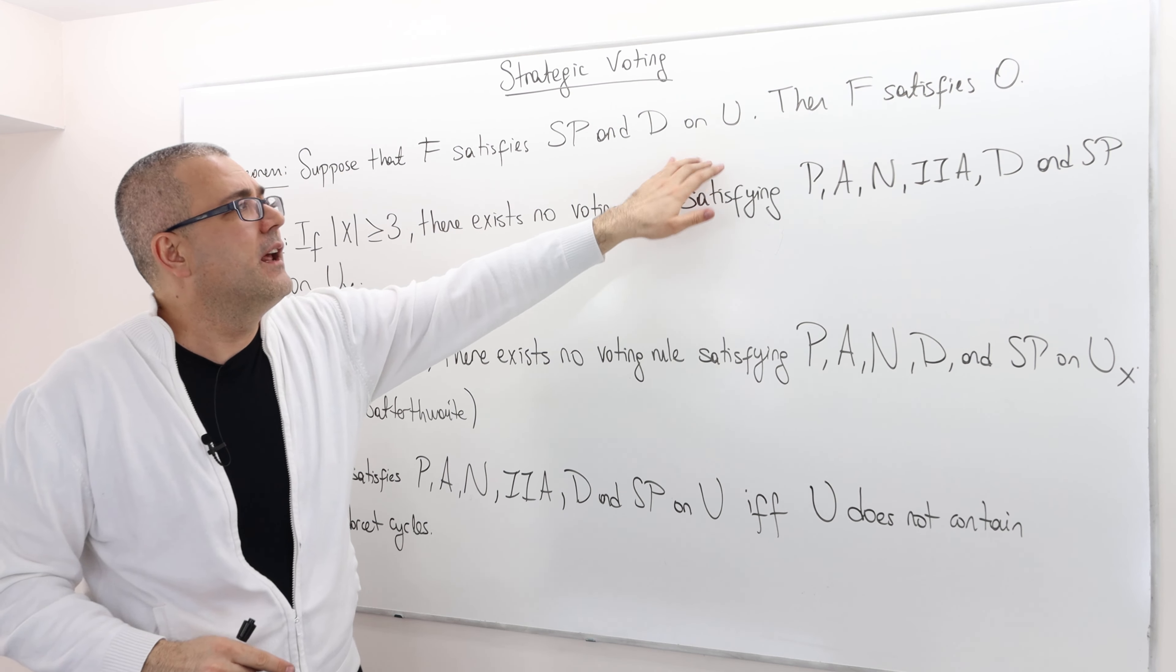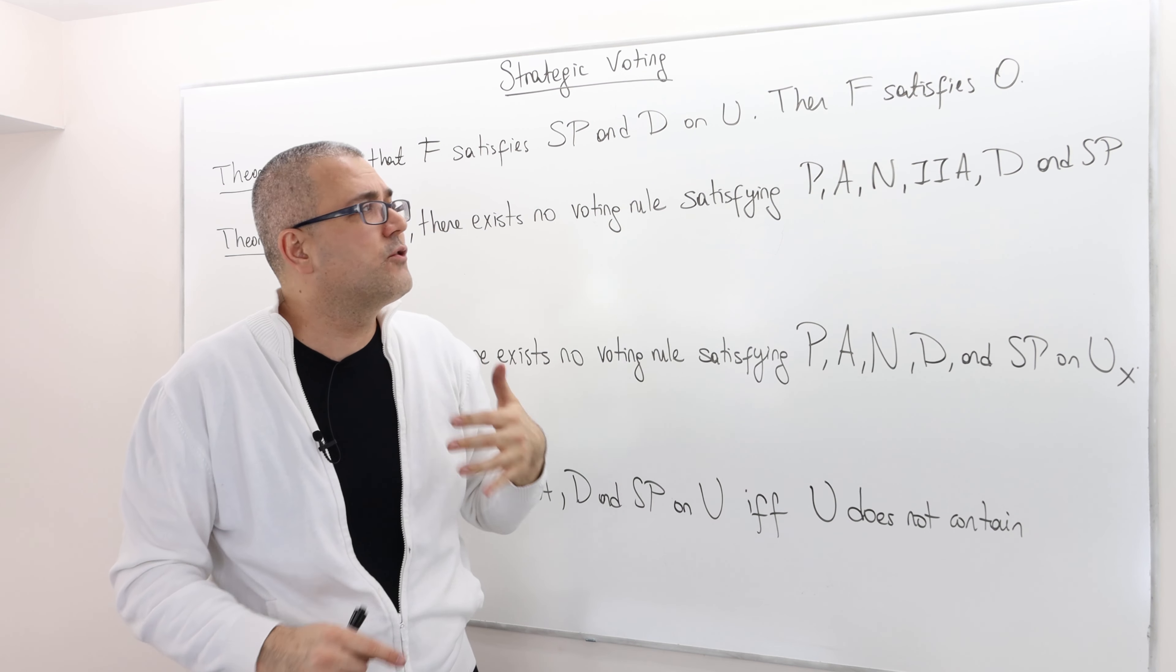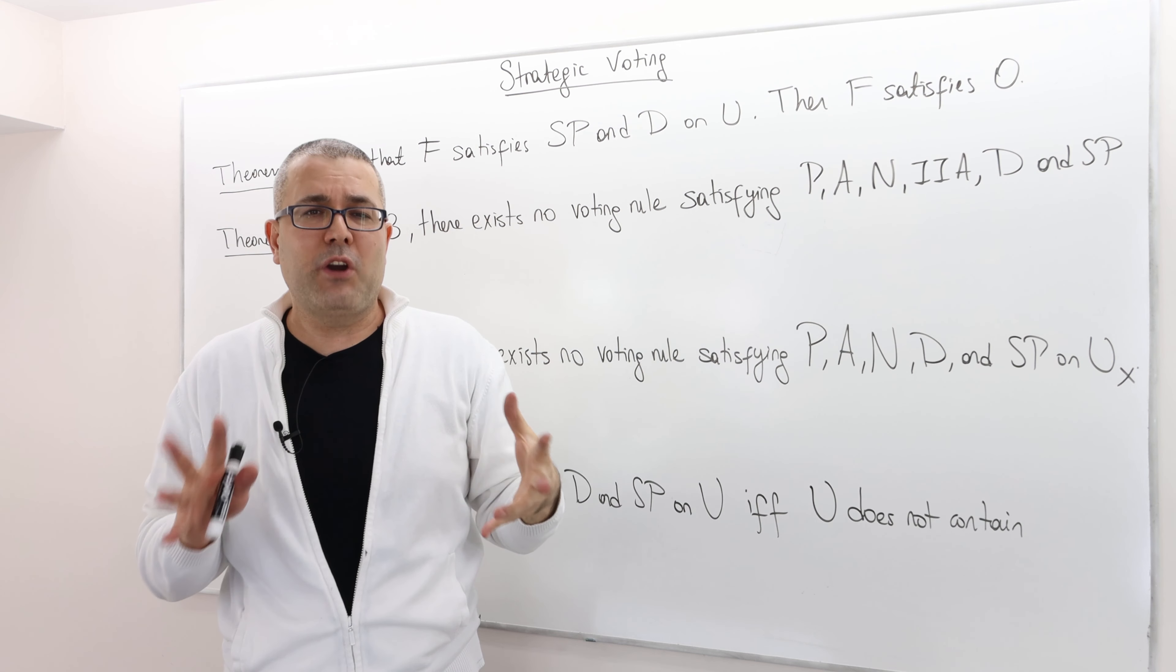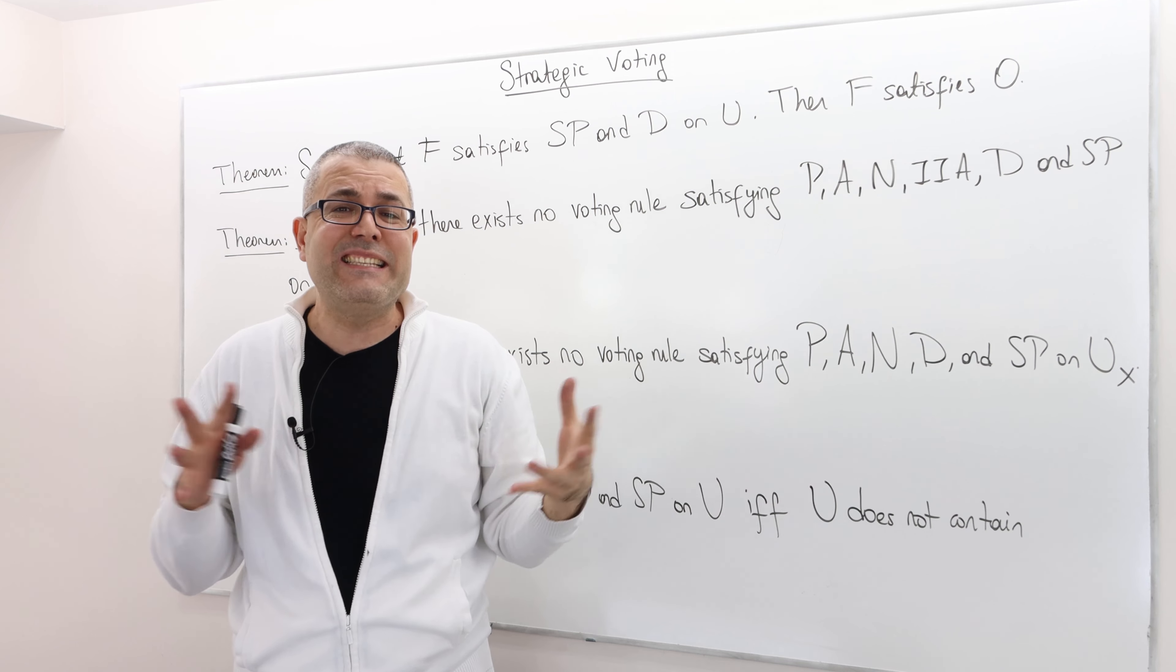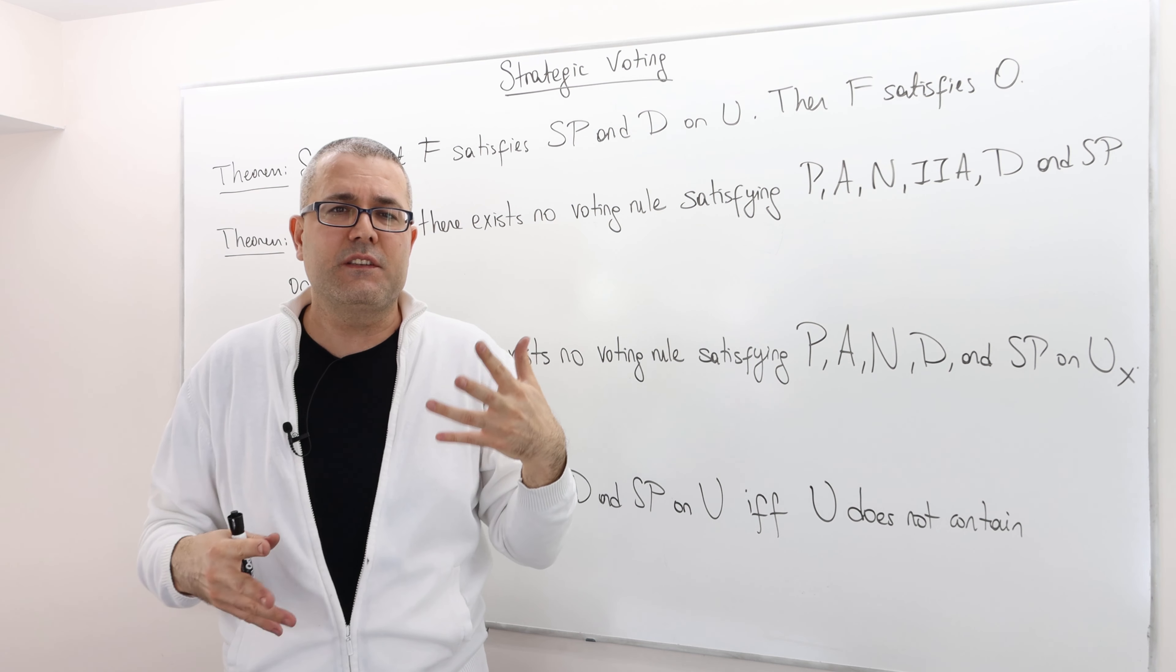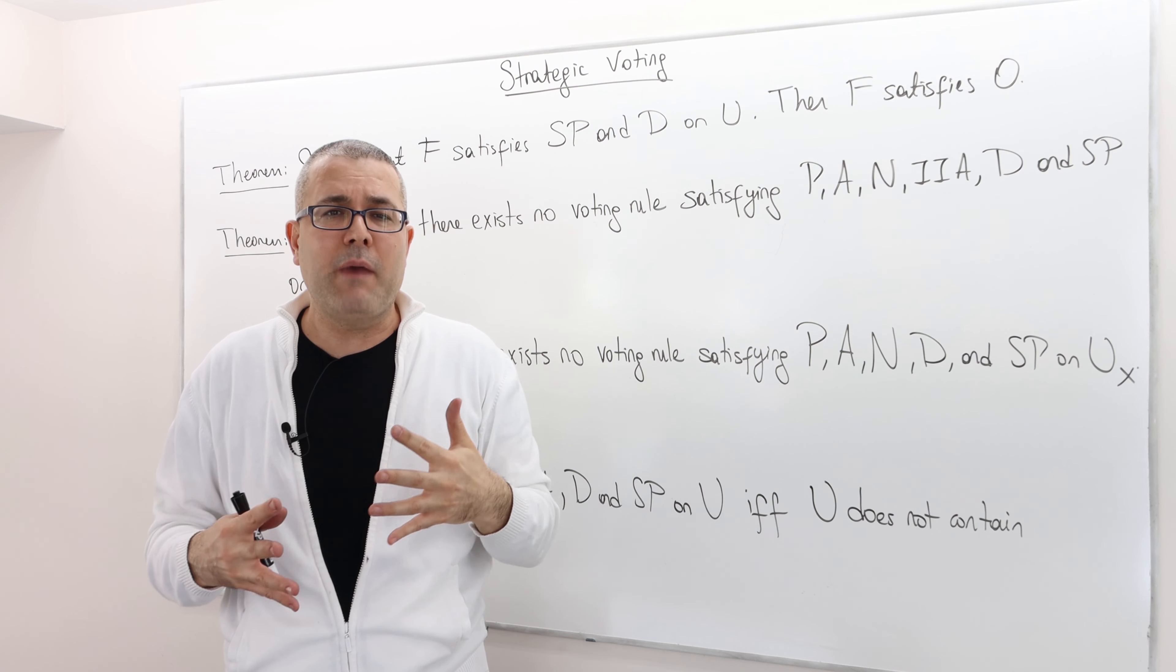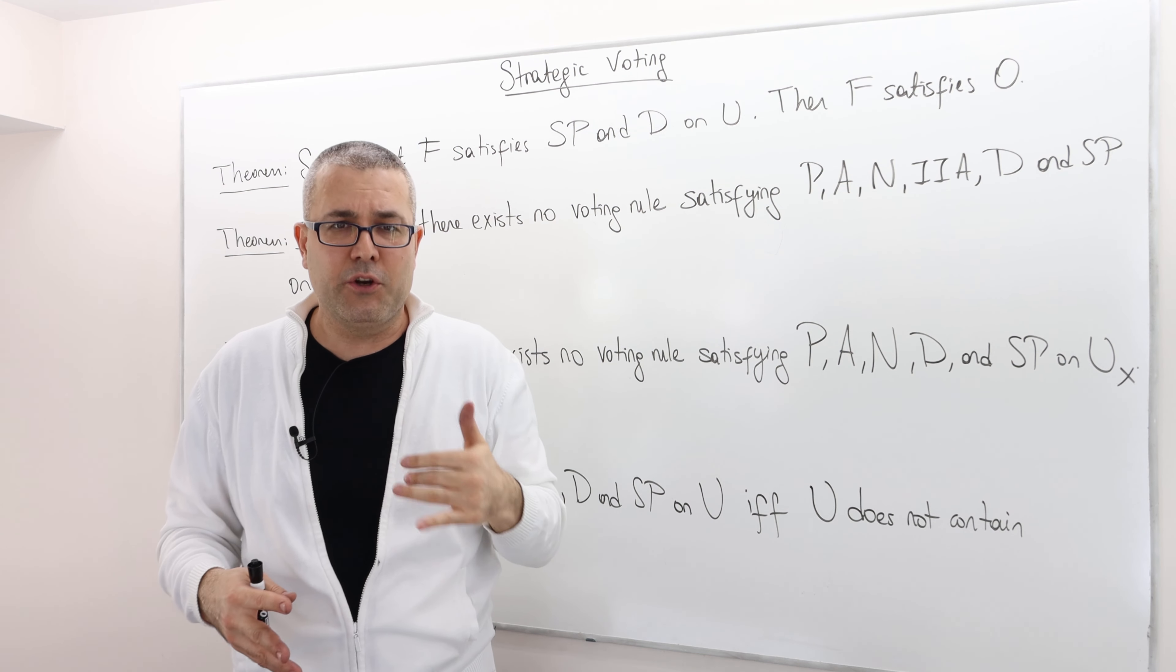Well then the voting rule F actually satisfies, I mean is ordinal, meaning cardinal preferences, the intensity of preferences is like how much you like candidate A over B is irrelevant. All it matters is how you rank the alternatives.